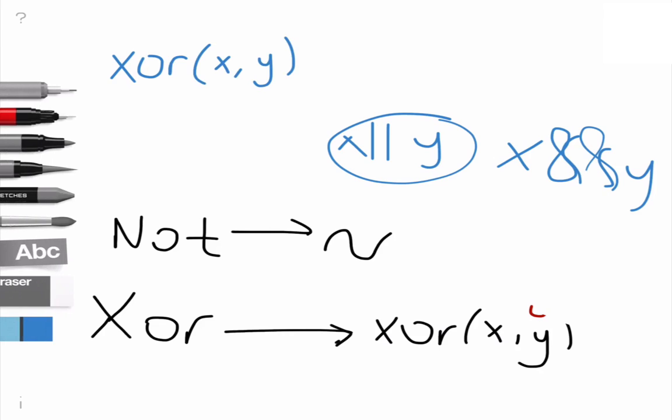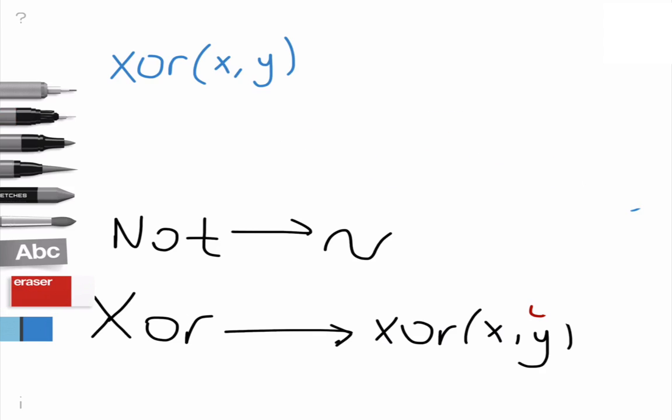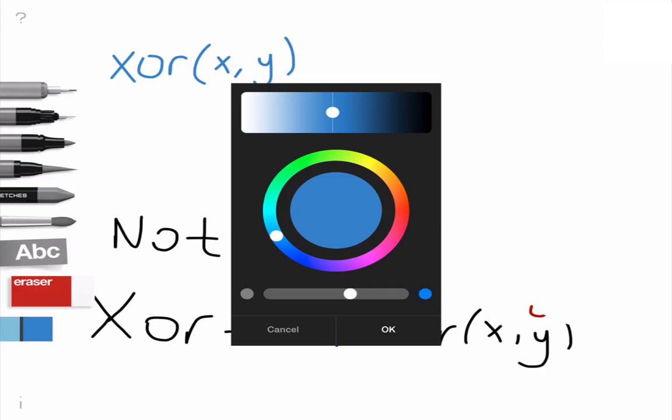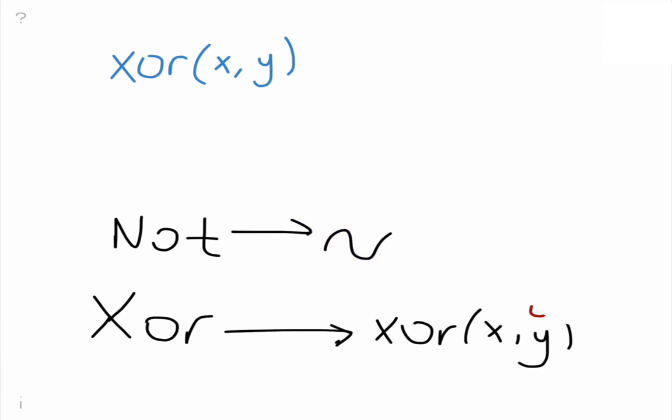So let me draw the truth table for this guy. Truth table is like this. 1, if it's... What's going on?